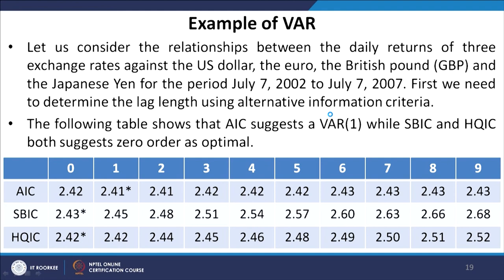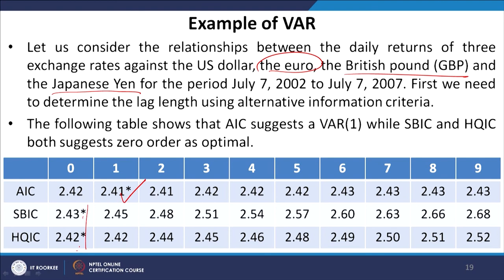As an empirical example, consider the relationship between daily returns of three exchange rates against the US dollar — the euro, British pound, and Japanese yen — for July 7, 2002 to July 7, 2007. To determine the lag length, we use alternative information criteria. The results show AIC suggests VAR(1), while SBC and HQIC both suggest 0 lags as optimal (stars indicate significance at 5%).